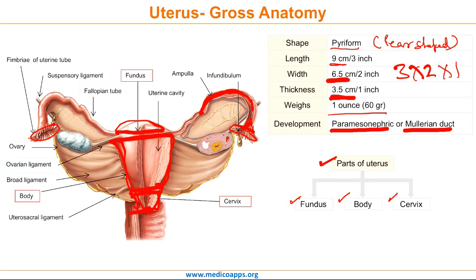Now we will study about the various attachments in the diagram. The suspensory ligament of the ovary, also called the infundibulopelvic ligament, is a fold of peritoneum that extends out from the ovary to the wall of the pelvis. The ovarian ligament connects the ovary to the lateral surface of the uterus. The broad ligament is a peritoneal fold that attaches the uterus, fallopian tubes, and ovaries to the pelvis. The uterosacral ligament is also noted here. Details about attachment and support are discussed in another MedecoApps video lecture.